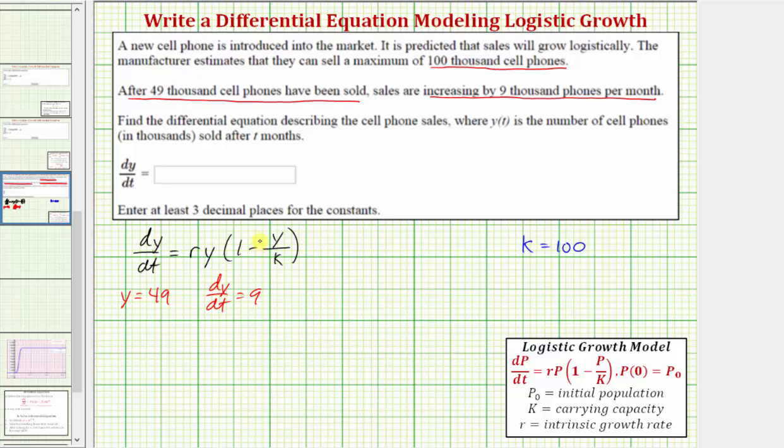Performing the substitution, we would have 9 for dy dt equals r times y would be r times 49, or 49r, times the quantity 1 minus y divided by k would be 49 divided by 100.